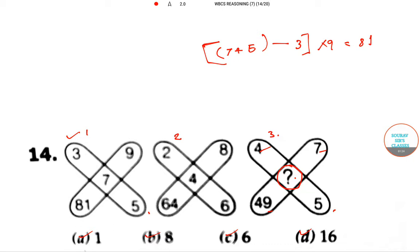So in the same formula, if we calculate for this diagram 2, we can use 4 plus 6 minus 2, minus 2 into 8. The answer is 64. You got your answer.